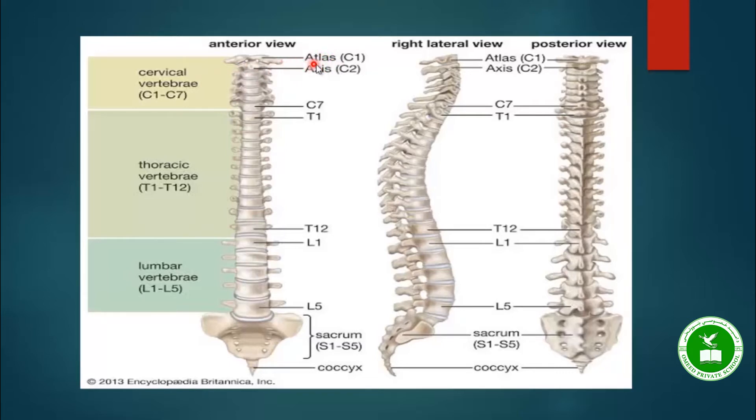The cervical vertebrae form the cervical region of the spine. The thoracic vertebrae form the thoracic region.